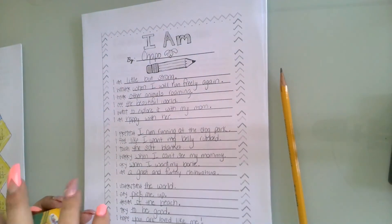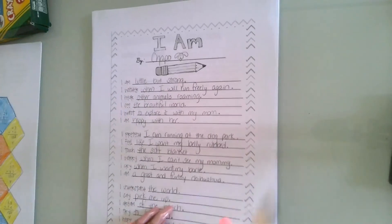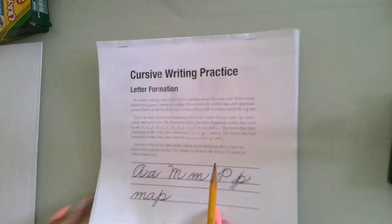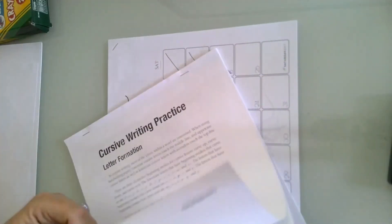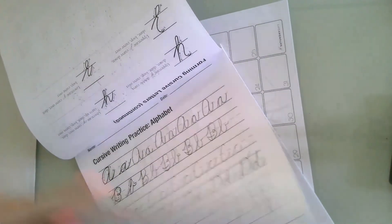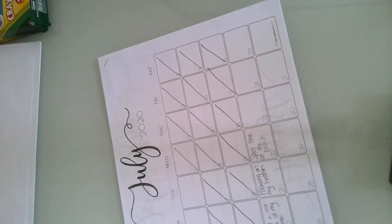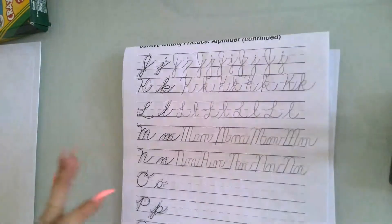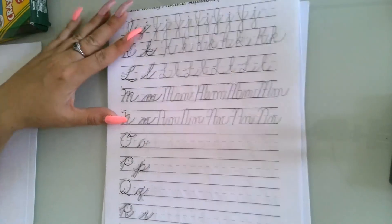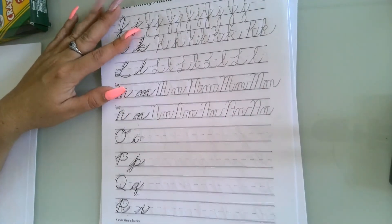Today for cursive we are working on O through S. You want to go to your fifth page. S's are so fun! Those are going to be pretty easy. Remember, I want you to try to get at least four practices on each line. O's and P's aren't going to be too bad. Q's won't be too bad either, either will the capital R. We've got some easier letters today in my opinion.